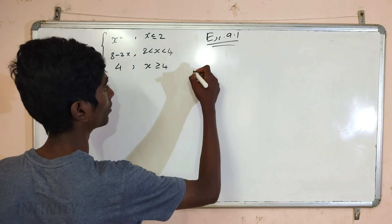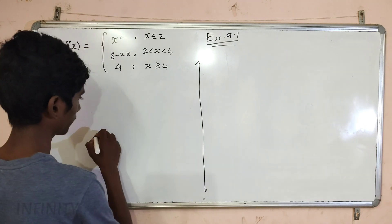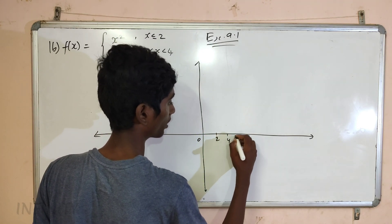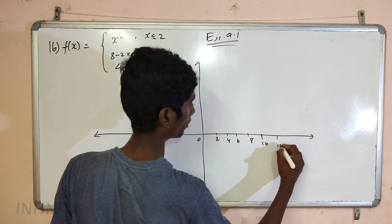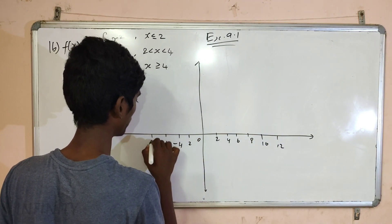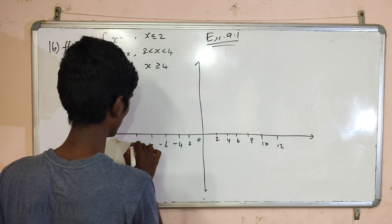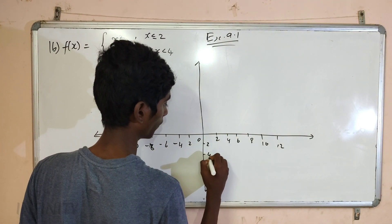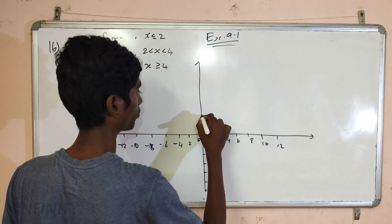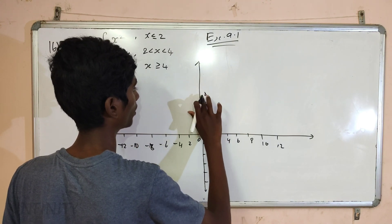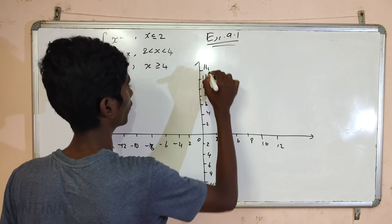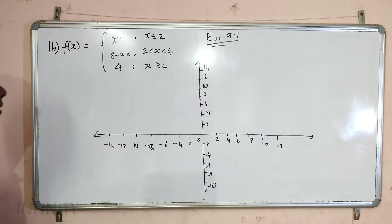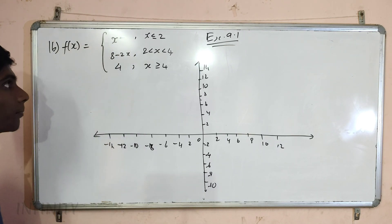We can see the graph. Let's mark the axes: 0, 2, 4, 6, 8, 10, 12 on the positive side, and minus 4, minus 6, minus 8, minus 10, minus 12, minus 14 on the negative side. Looking at the graph, what is the value at x equals 2?